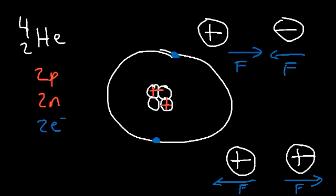The two protons within the nucleus feel an electric force that should push them apart, yet they remain intact. Therefore there must be another force that keeps them together. The force that holds the nucleus together is known as the strong nuclear force, which is why the protons don't repel each other.